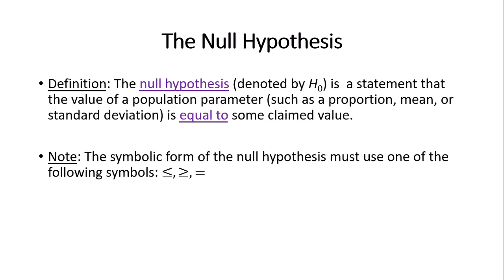The null hypothesis, denoted by H₀, is a statement that the value of a population parameter — such as a proportion or mean — is equal to some claimed value. I want to focus on the word 'equal to' here, as this will clear up a lot of confusion. The null hypothesis always includes equality; equality can only go to the null hypothesis.